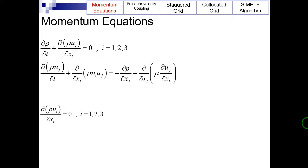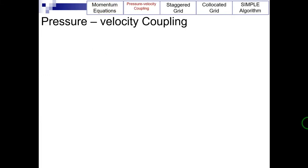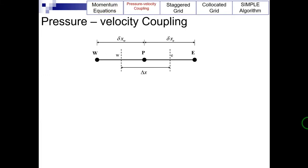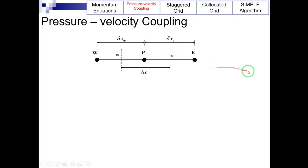Due to the lack of any relation between density changes and pressure, a pressure equation must be obtained as a constraint on solving the momentum equations to satisfy the continuity equation. This pressure equation is obtained indirectly through the continuity equation. Now let's dive into the problem of pressure-velocity coupling.